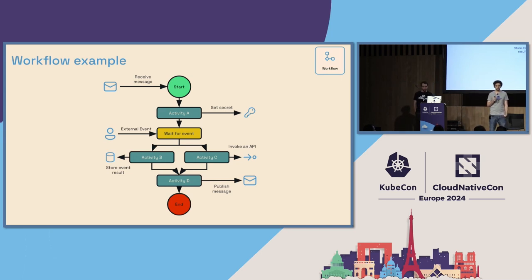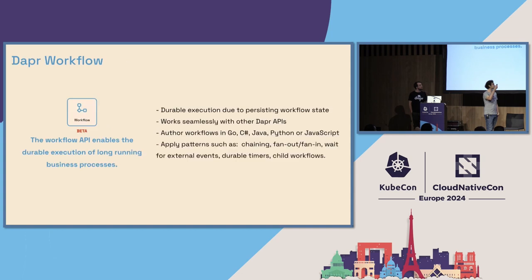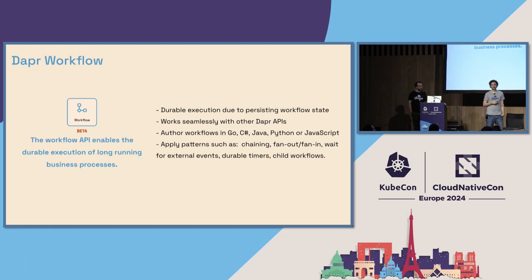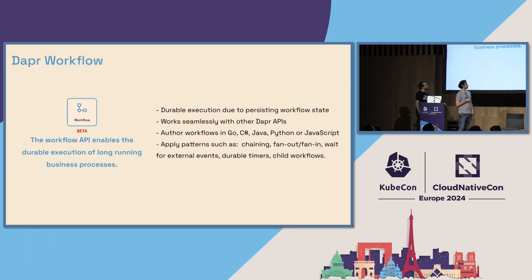With Dapr, you can do this in 50 lines of code — maybe even less. We support Go, C#, Java, Python, and JavaScript, and we're adding more languages. Dapr Workflows is going to become stable this year — in 1.15. No promises, but that's the intention. It's a really great API.